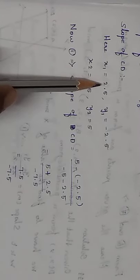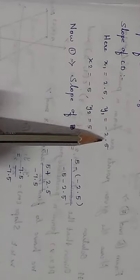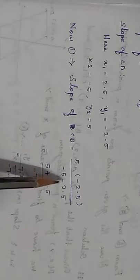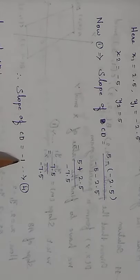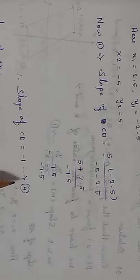Slope of CD: C is (2.5, -2.5) and D is (-5, 5). So x1 is 2.5, y1 is minus 2.5, x2 is minus 5, y2 is 5. Equation 1 implies slope of CD equals (y2 minus y1) divided by (x2 minus x1): 5 minus (minus 2.5) divided by minus 5 minus 2.5. That gives 7.5 divided by minus 7.5, which equals minus 1. Therefore slope of CD equals minus 1. This is equation 4.